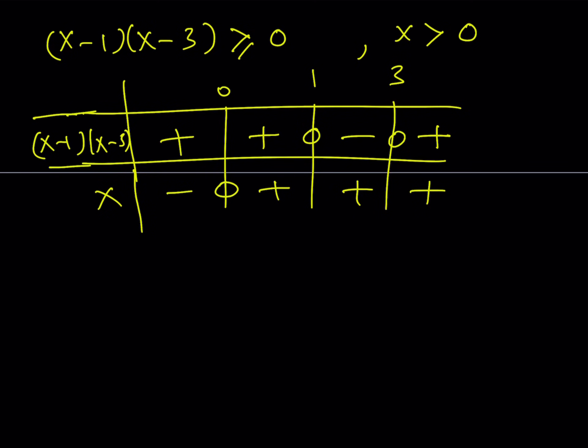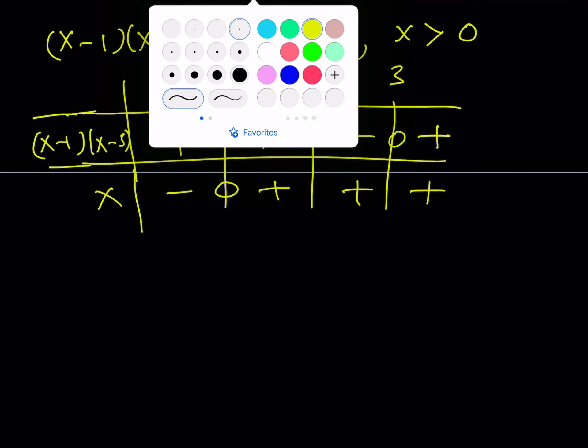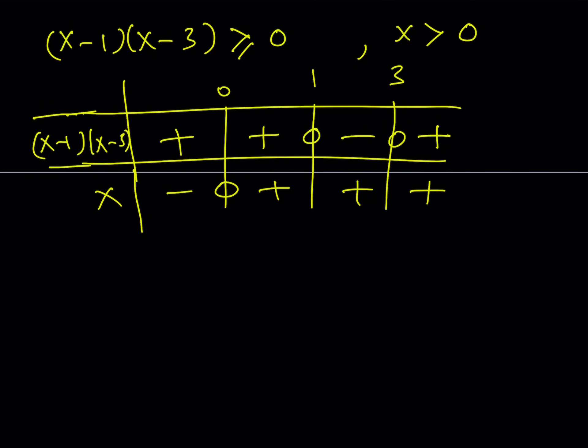Great. So here's what I want. I want the intersection. The top is going to be positive, and the bottom is going to be positive as well. So I'm looking for the plus plus. So here's my domain. My domain is going to be this interval and this interval. So that means x needs to be between 0 and 1 or greater than 3. But let's see if any of those numbers will be included.